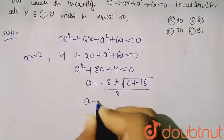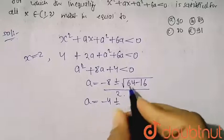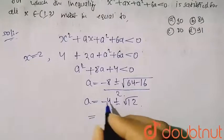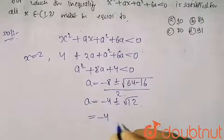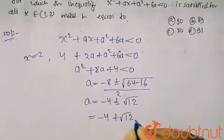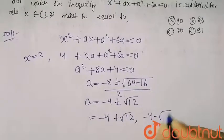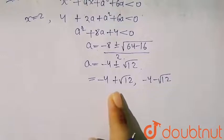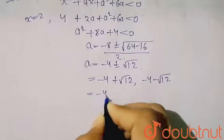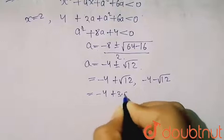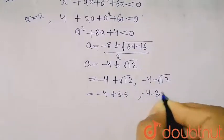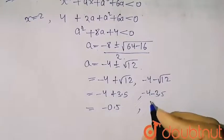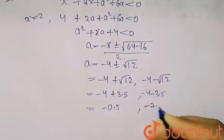Here I will get -4 ± √48, which gives √12. So your value of a will be two values: one is -4 + √12 and another value is -4 - √12. Now √12 can be approximately 3.5. So the two values are -4 + 3.5 = -0.5 and -4 - 3.5 = -7.5.